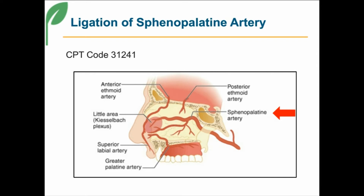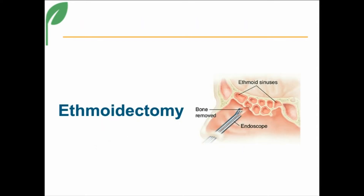Now to the one I think is going to be sticky this year — the ethmoidectomy codes. Here's a picture of what an ethmoidectomy looks like. Starting in a series of family codes beginning with 31254, these are all ethmoidectomy codes, anchored with ethmoidectomy, and the procedure is differentiated by partial versus total.